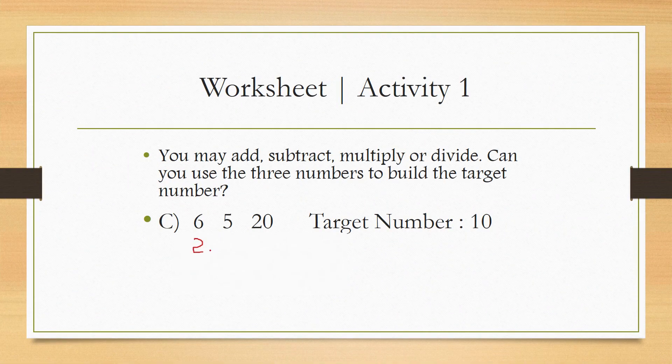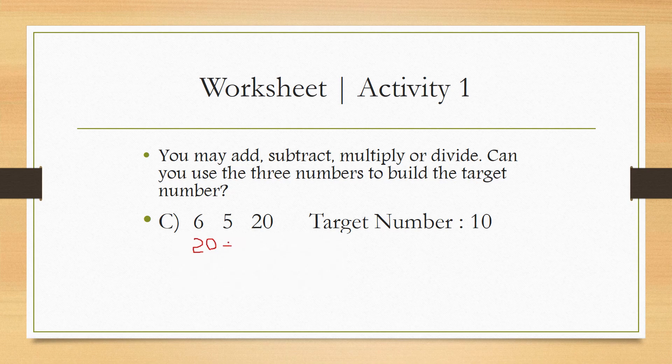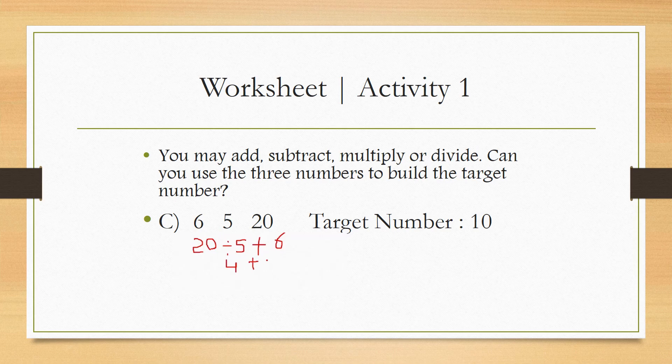By these three numbers, we can do division, addition, subtraction or multiplication. So here 20 divided by 5 will give 4. Then add 6. So we can get the targeted number 10. 20 divided by 5 is 4. Then 4 plus 6 is 10.